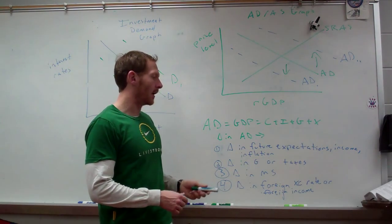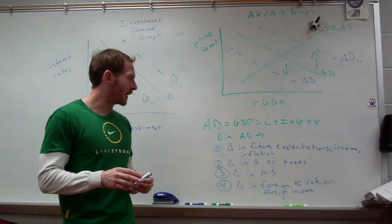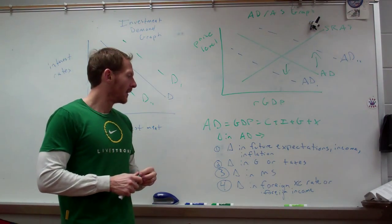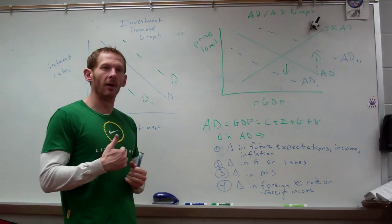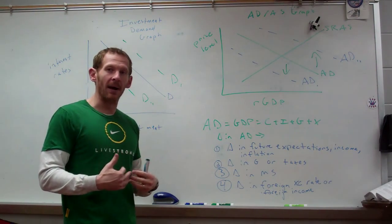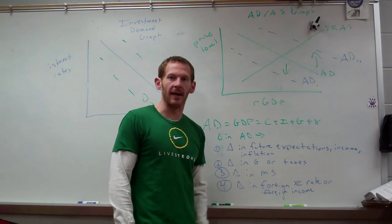And lastly, if there's changes in the foreign exchange rate, which is the last unit, and for some of you may have gotten there and others are not there yet, or a change in foreign income. For instance, if one of our trading partners that buys lots of American goods goes through a recession and they're not buying our goods, well then our exports will go down and then we'll shift down to AD sub 1.